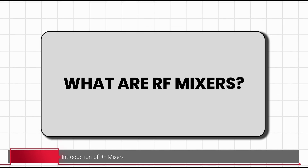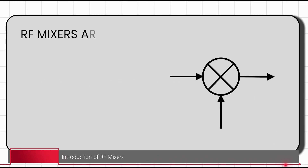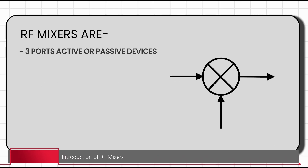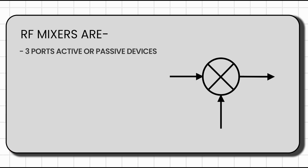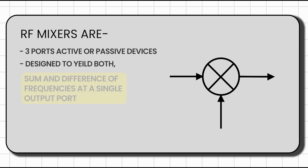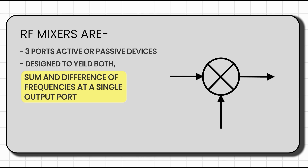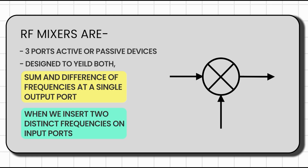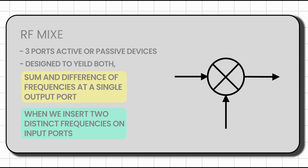RF mixers are 3-port active or passive devices. They are designed to yield both a sum and a difference of frequencies at a single output port when we insert two distinct frequencies on the input ports.